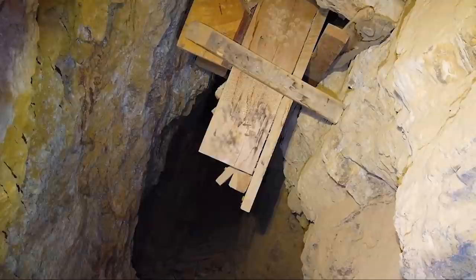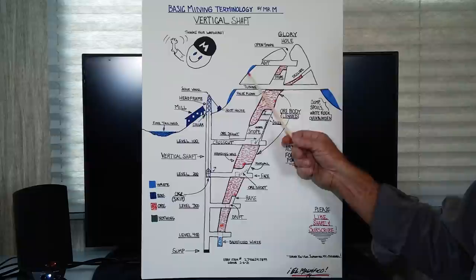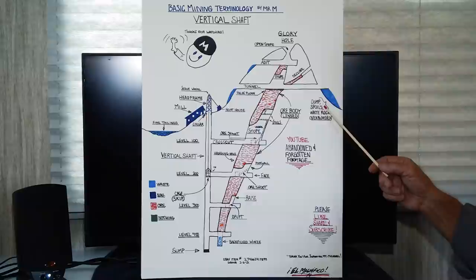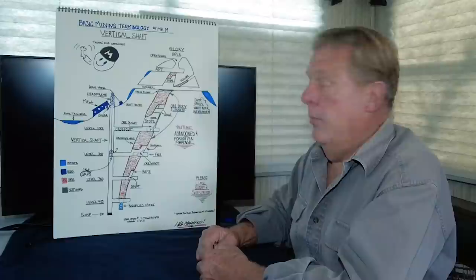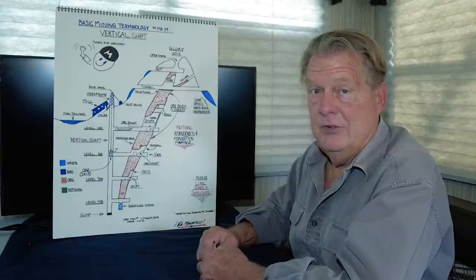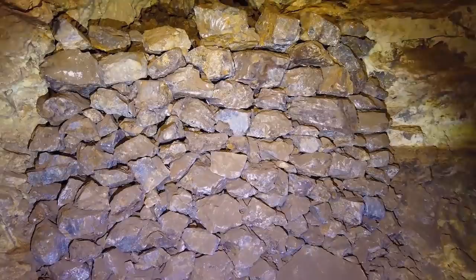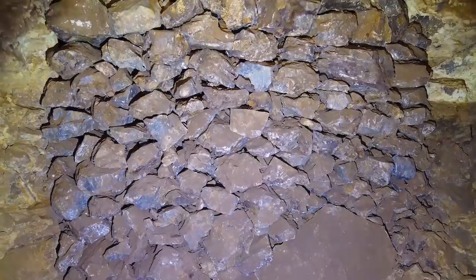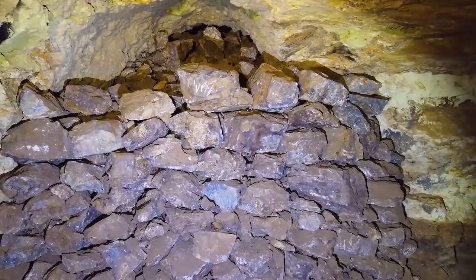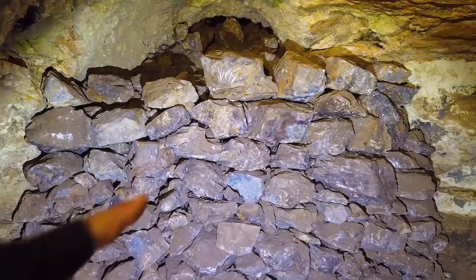When you tunnel or build an addit, you always have waste rock that winds up being shoved off the end. They call it dump spoils, waste rock, overburden most of the time. However, miners try to keep all their rock inside if they can and backfill areas that they haven't already used, like this winze at the bottom. Look at how carefully they packed in that gobbing.